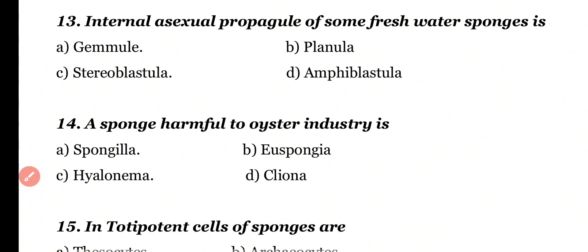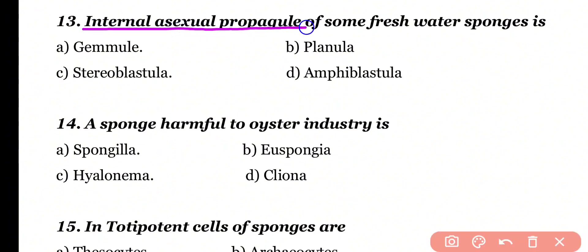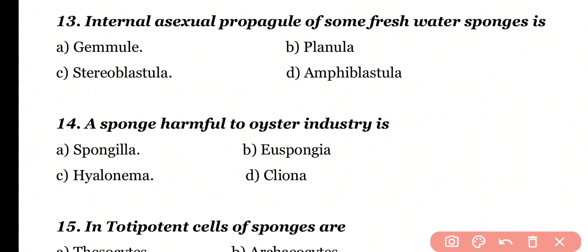Question number 13. Internal asexual propagule of some freshwater sponges is: gemmule, planula, stereoblastula, or amphiblastula. Correct answer is option A. Gemmule is the internal asexual propagule of sponges and it helps sponges to survive unfavorable environmental conditions.